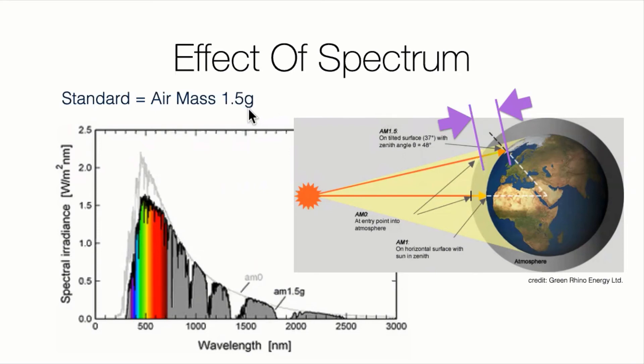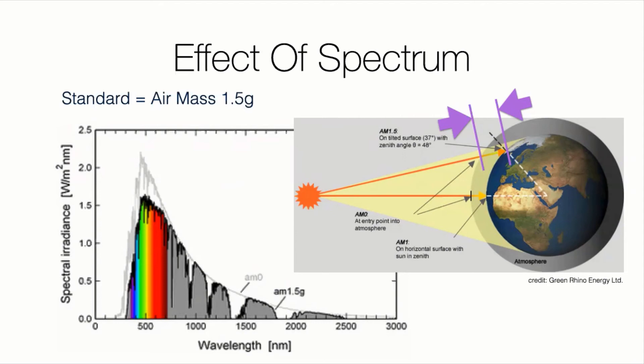So that's the definition of air mass 1.5. And the G stands for global as opposed to direct or diffuse. Where direct would be from the circle of the sun and diffuse would be from the blue of the sky. Global is all of that added together. So going through one and a half thicknesses of atmosphere, global catching it all together. That's what defines it. So it's kind of going backwards. It's defining the spectrum based on the thickness of atmosphere that it's going through. But let's take this further.